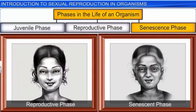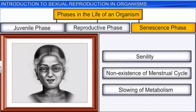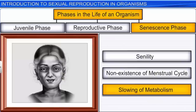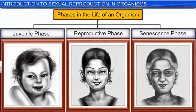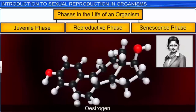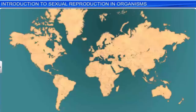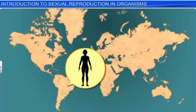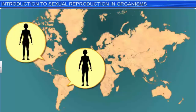The end of the reproductive phase in living organisms coincides with the beginning of the senescent phase, during which we see changes such as senility, non-existence of the menstrual or estrus cycle, and slowing of metabolism. Senescence ultimately leads to death. Interestingly, the transition between the three stages is controlled by hormones as well as environmental factors. For instance, the release of the hormone estrogen triggers the menstrual cycle in girls, and girls living in tropical regions experience menstruation at an earlier age than those living in temperate regions.